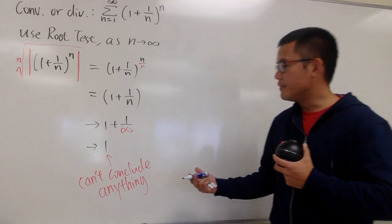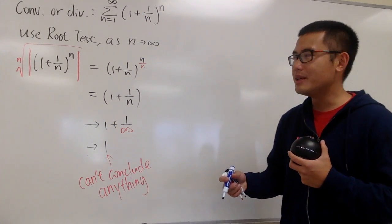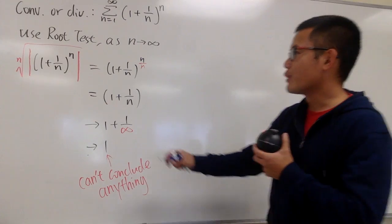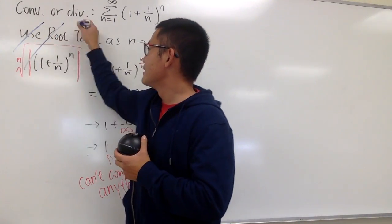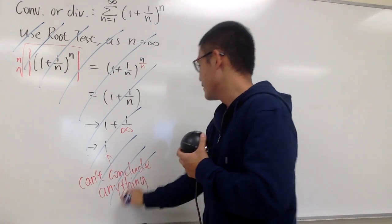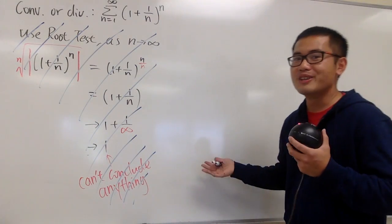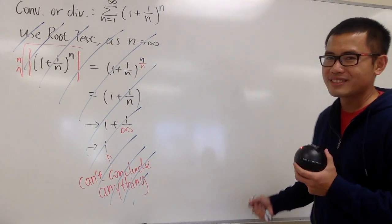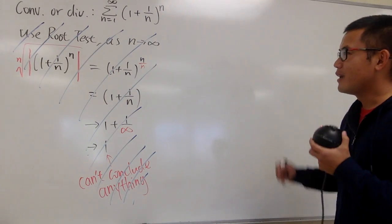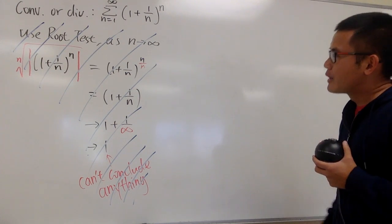And on the exam, if this happens, well, you just have to get your eraser, or maybe if you have enough space, you're just going to cross this out. Because whenever you cannot conclude anything, unfortunately, this is just not good. So you have to erase it and then try something else so you can get the arguments, get the reasoning right for the series.